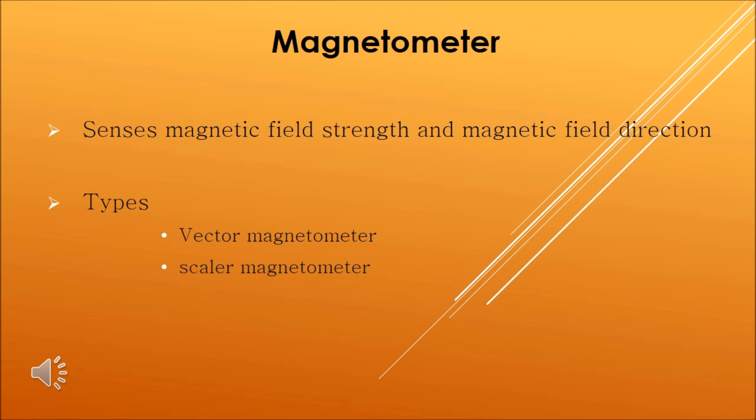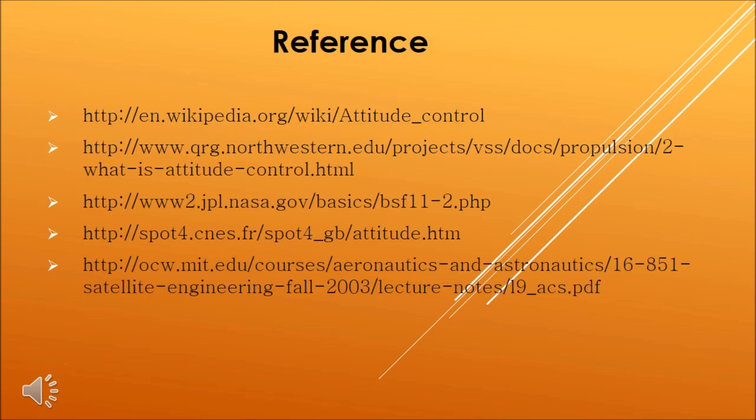Magnetometers have two types. First is the vector magnetometer: a vector magnetometer measures the flux density value in a specific direction in three-dimensional space. Next is the scalar magnetometer: a scalar magnetometer measures only the magnitude of the vector passing through the sensor, regardless of direction. Here are the references to some of the sources that we used in our project.